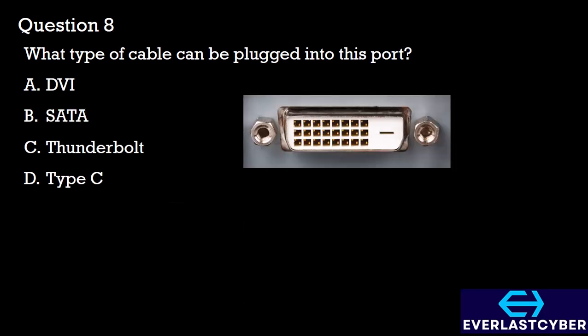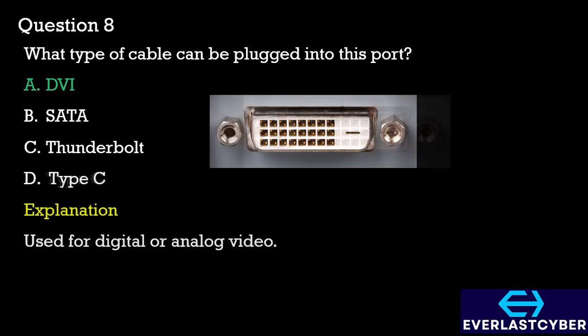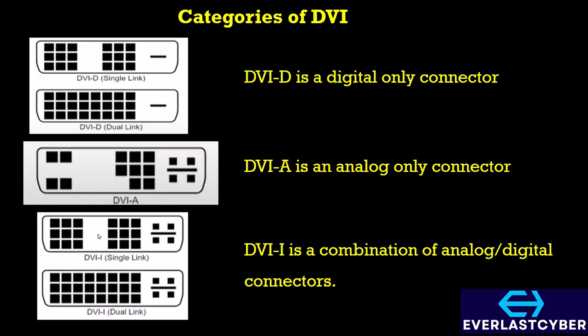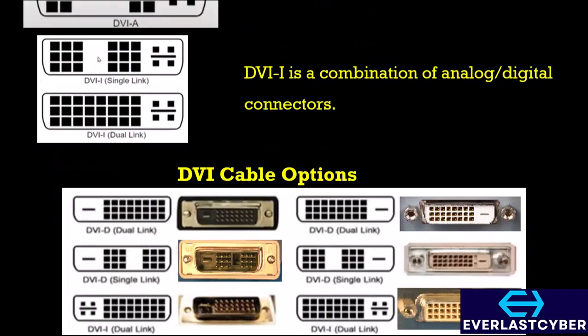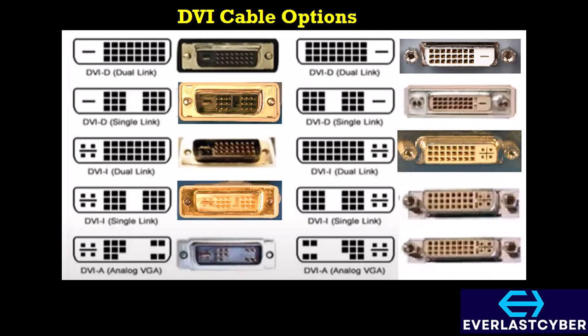Question 8: What type of cable can be plugged into these ports? A. DVI, B. SATA, C. Thunderbolt, D. Type-C. This is a typical DVI port, used for digital or analog video. It is available in three categories: DVI-D, which is a digital-only connector; DVI-A, which is an analog-only connector; and DVI-I, which is a combination of both analog and digital. There are also different cable options for DVI — a diagram is provided so you can screenshot and study the different cable options for each DVI category.